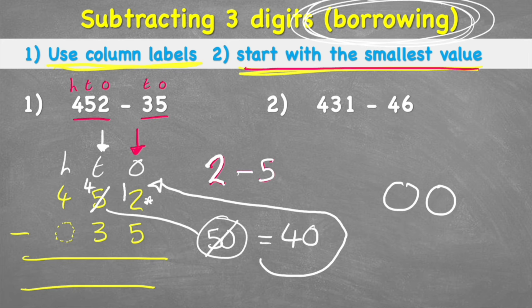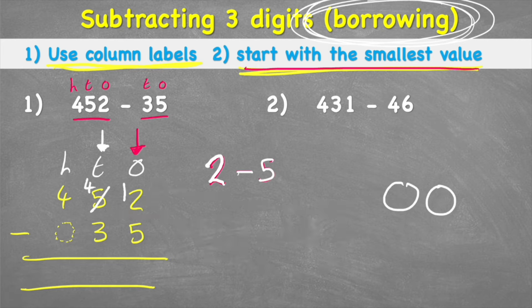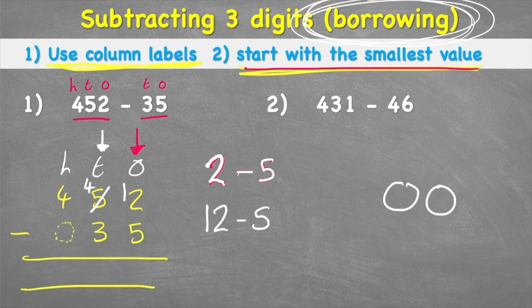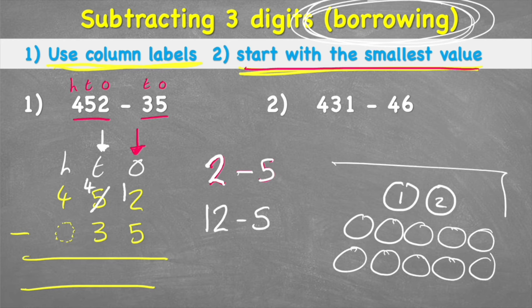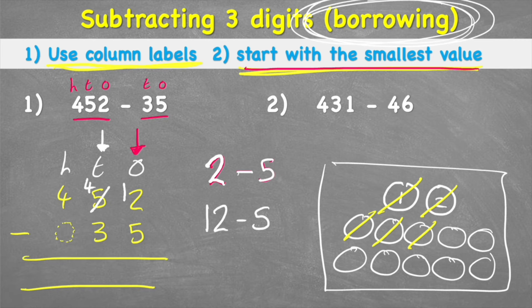Essentially, I've taken the five in the tens, turned it into a four, and given the one to the ones column so my question now reads 12 subtract 5. I can show this with counters: counting to twelve and then taking away five leaves seven. So seven is the answer to the ones column.